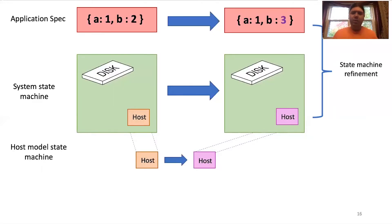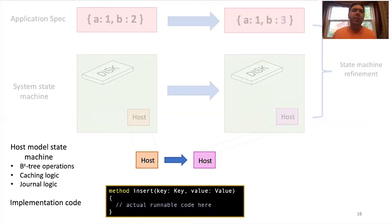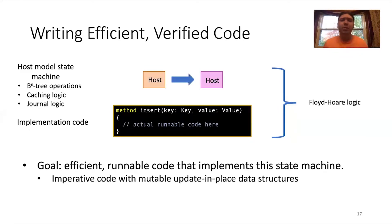Instead, for the rest of the talk, I'm going to focus down at the bottom of this picture, where we have our host state machine. Now, this is a pretty complicated state machine. For VeriBetrKV, it's going to have B-epsilon tree logic, caching logic, even journal logic. However, it's still just an abstract state machine. So the final step is to actually make an implementation with actual compilable runnable code. And then verify that the implementation implements the state machine. And at this point in the stack, we've sort of removed the environment from consideration. So we can use very well established traditional verification methods for this part, like Floyd-Hoare logic. Our goal then is to have efficient runnable code that implements the state machine and verify that code. And generally, having efficient code means that we're going to want to write imperative code with mutable data structures that we update in place.